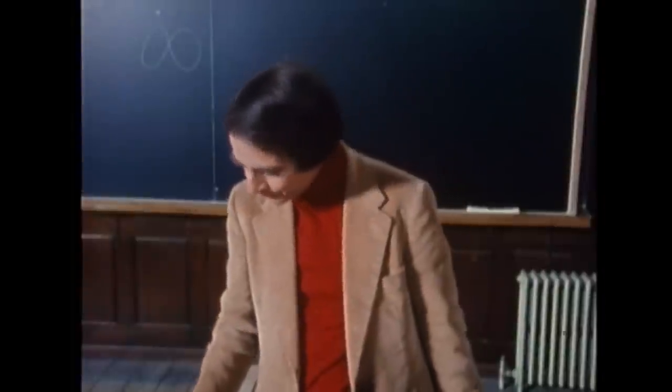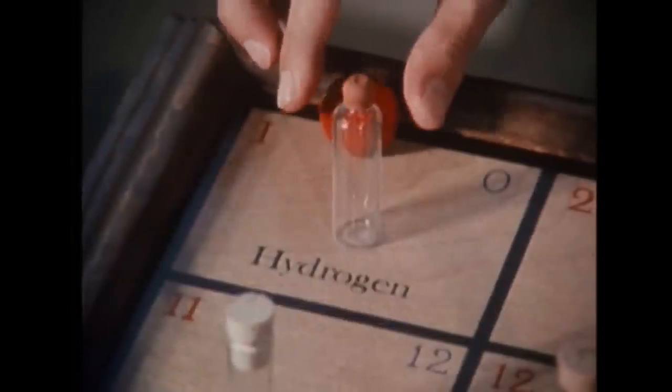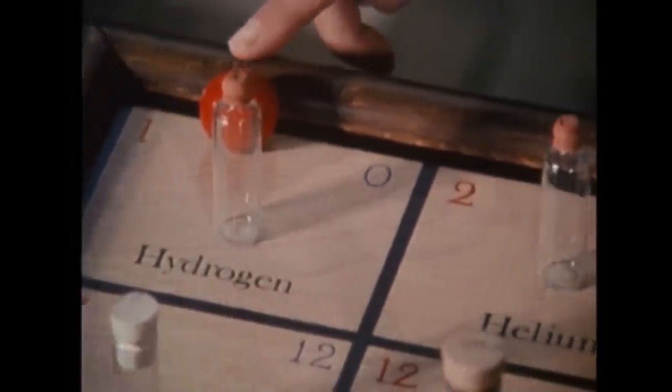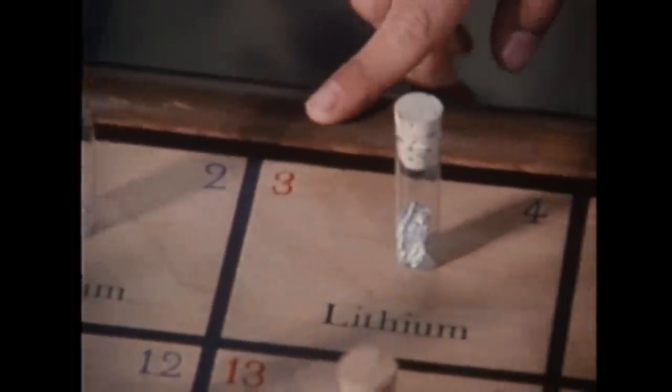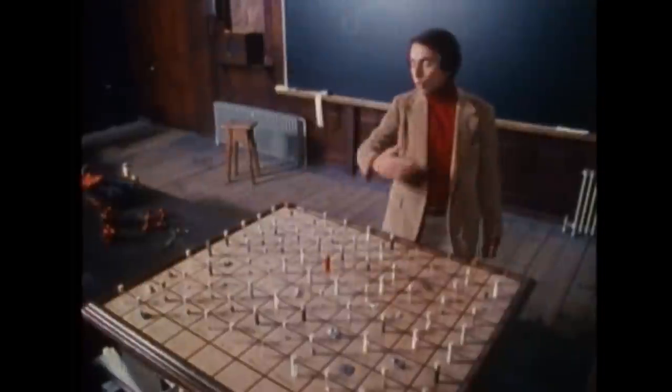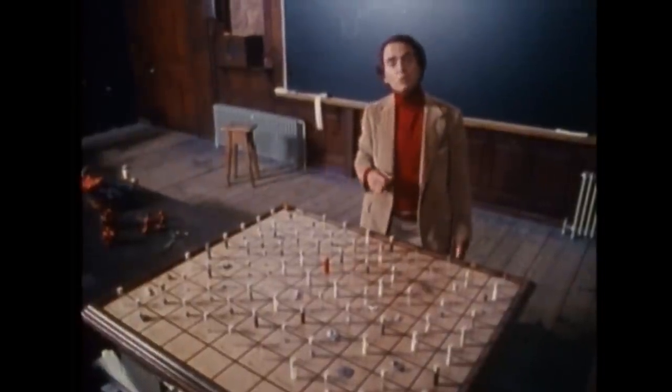If you're an atom and you have just one proton, you're hydrogen. Two protons, helium. Three, lithium, and so on, all the way to 92 protons, in which case your name is uranium.